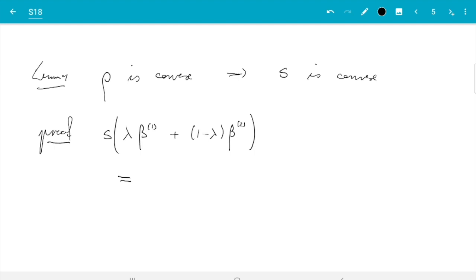But first, by definition, that is sum i from 1 to n, rho of Y minus X i 1 lambda beta 1 plus 1 minus lambda beta 2 and the first component of these betas minus X i 2 lambda beta 1 second component plus 1 minus lambda beta 2 second component and so on. Originally, we would have squared that expression, but here the whole point of this section is we apply the function rho instead to get an M estimate.